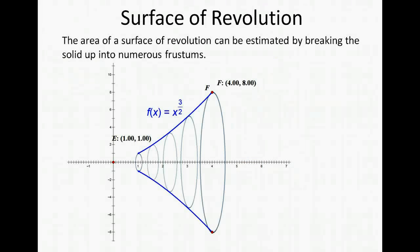A surface of revolution area can be found by breaking up the solid into numerous frustums. To get the area of the surface of revolution we will add up the sum of all the surface areas of the numerous frustums.